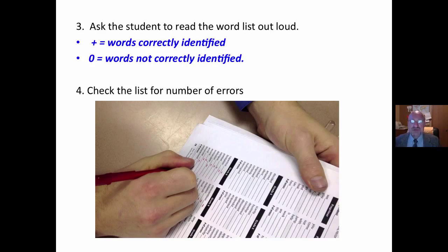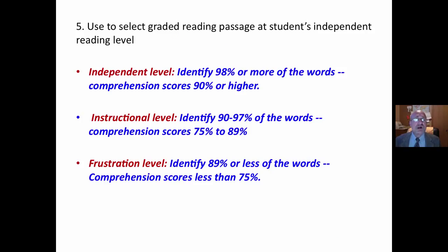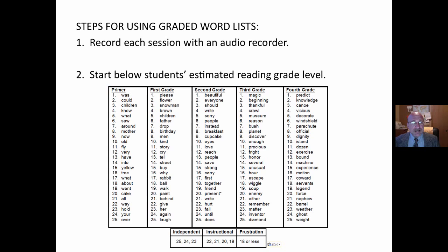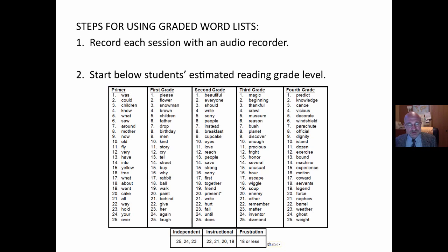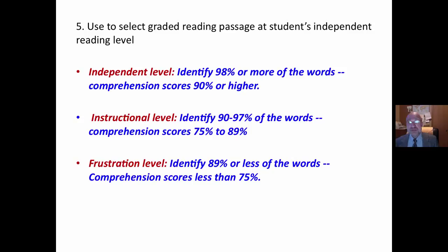We check the list for the number of errors. We keep going up until we hit the frustrational level. Based on the number of errors, we determine whether it is the independent level, the instructional level, or the frustration level.